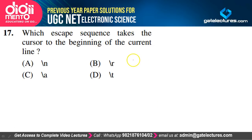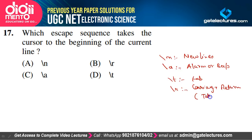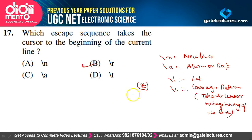Which escape sequence takes the cursor to the beginning of the current line? \n is newline, \a is alarm/beep, \t is tab, and \r is carriage return — which takes the cursor to the beginning of the line. Option B is correct.